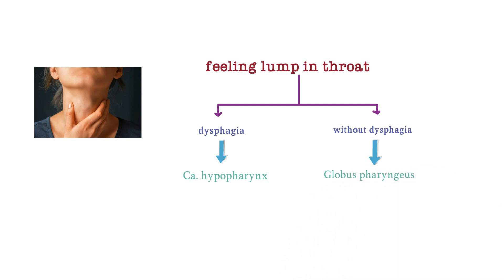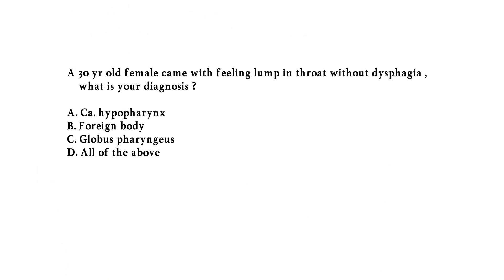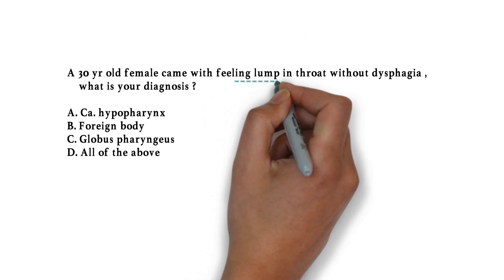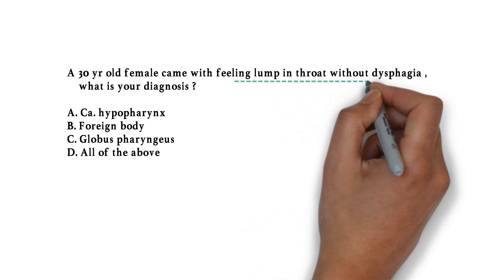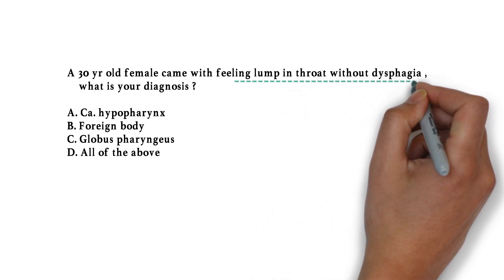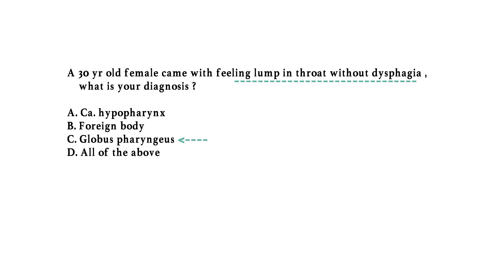If it is without dysphagia, then the answer is globus pharyngeus. So when a question mentions feeling lump in the throat, check for dysphagia. If there is dysphagia, it is carcinoma hypopharynx. If there is no dysphagia, it is globus pharyngeus. In this question it says 'throat without dysphagia,' so the answer is globus pharyngeus.